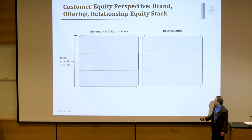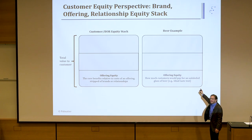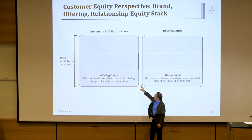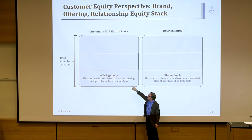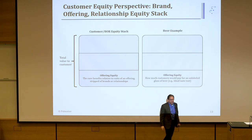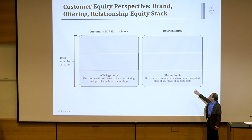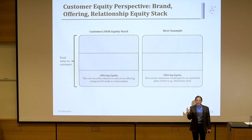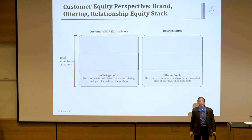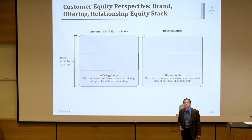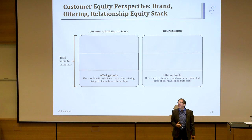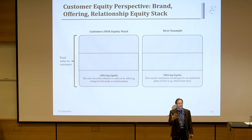Let's go build the equity stack. This is the total value the customer is captured in this stack, and I'm going to do it with an example of a beer. First, I'm going to start with offering. Offering equity is defined as the core benefits relative to the cost of an offering. Let's think of it in a beer example. If I took a bottle of beer, put it in a paper sack, and asked you to taste it, you tasted it and I said how much would you pay for that? You don't know the brand. You'd say: I'd pay $5 for that beer. It tastes pretty good. So the offering equity with price and performance — that's $5.